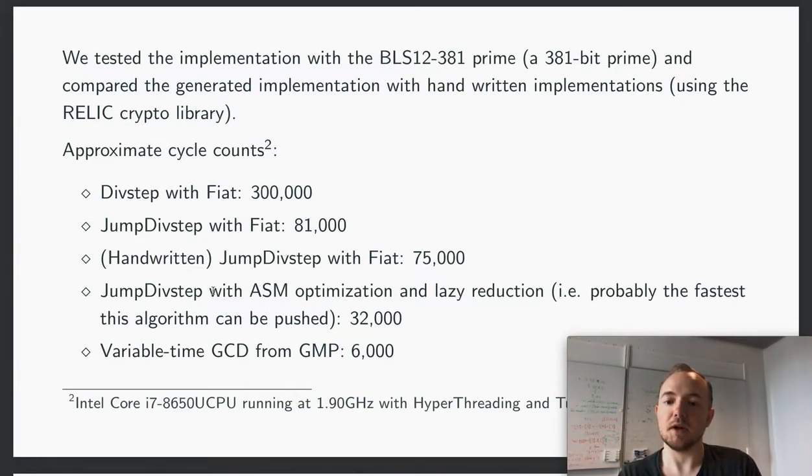We also tried to write this entire algorithm by hand using only the Fiat arithmetic, and you still get a small speed up there. So the speed up from 81,000 to 75,000, we should be able to cut that. As you can see here, the JumpDivStep algorithm implemented by hand and using assembly optimizations and lazy reduction, so lazy reduction is also something that we would be able to do in Fiat but it requires to extend it a bit more.